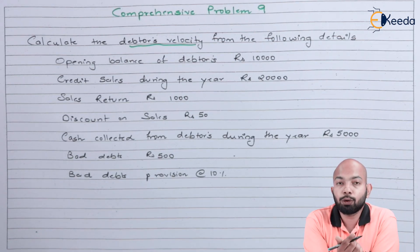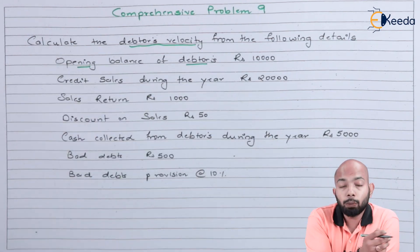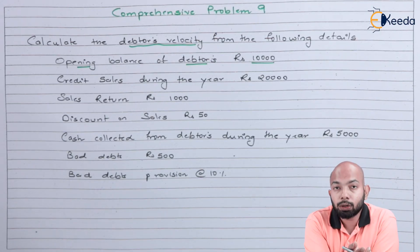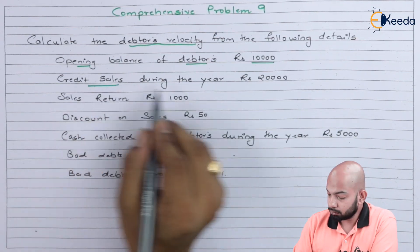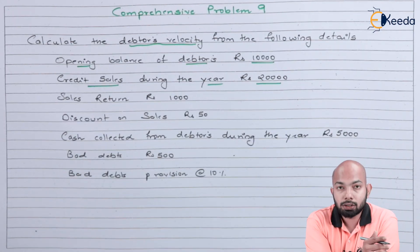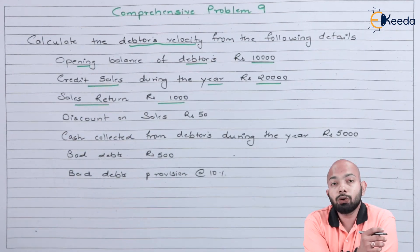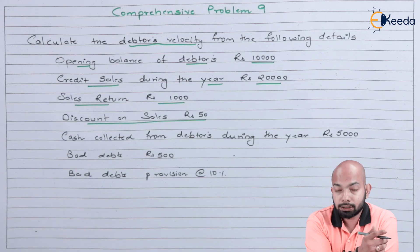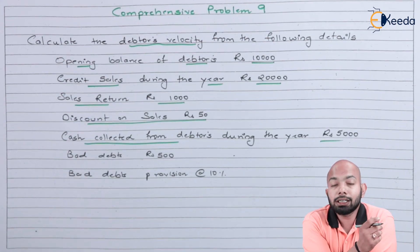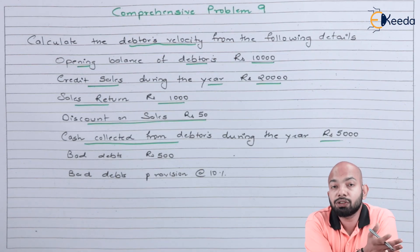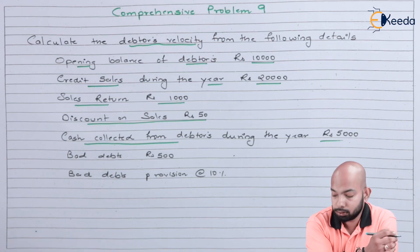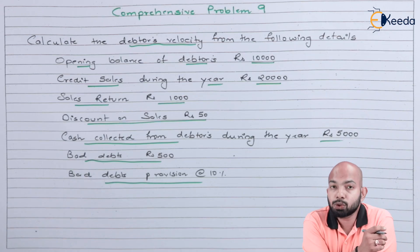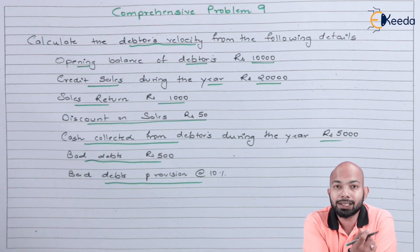You have to calculate the debtor's velocity from the following information. The opening balance of the debtor was Rs. 10,000. Credit sales during the year were Rs. 20,000. Sales return amounts to Rs. 1,000. Discount on sales amounts to Rs. 50. Cash collected from the debtors during the year is Rs. 5,000. Bad debts are Rs. 500. Bad debt provision is to be done at the rate of 10%. Using all these details, we have to calculate debtor velocity.